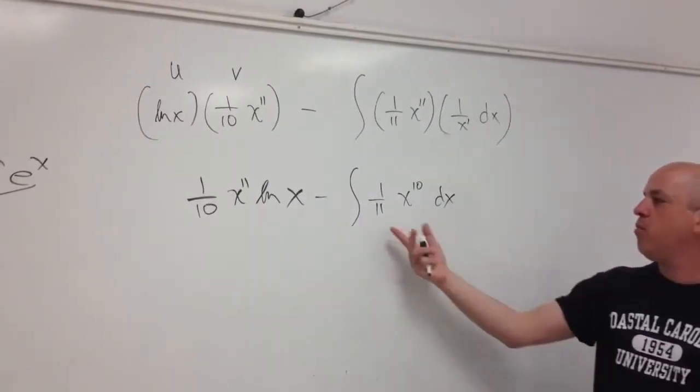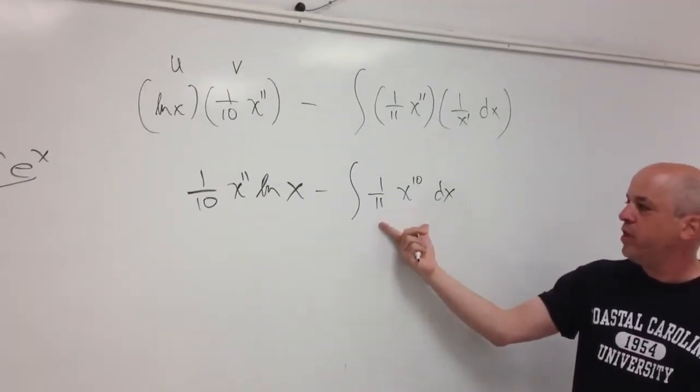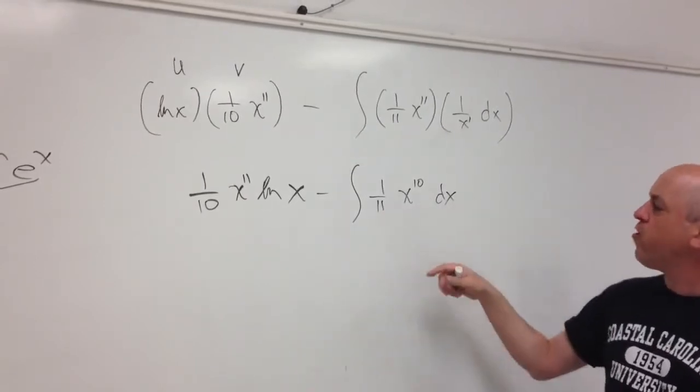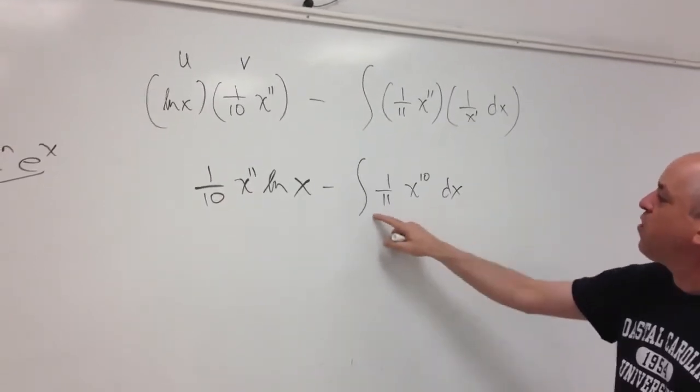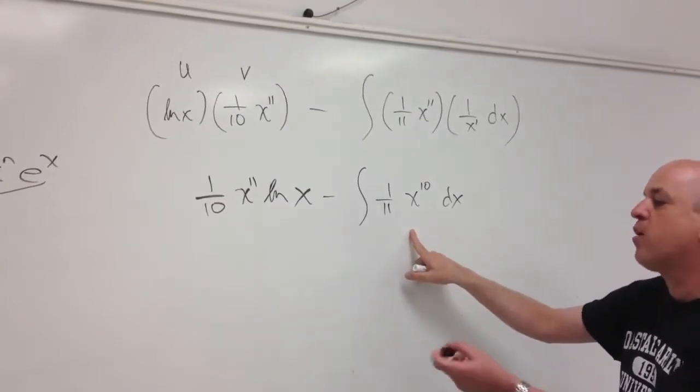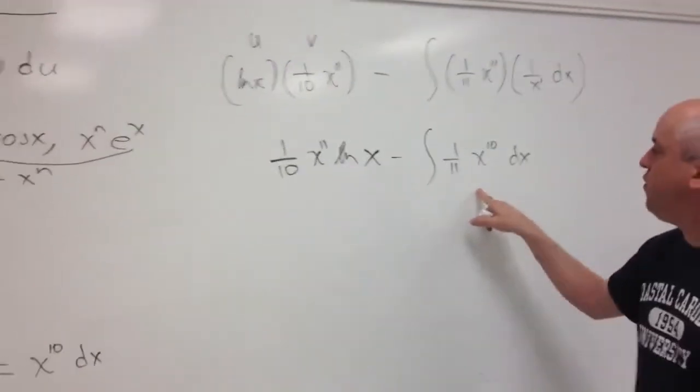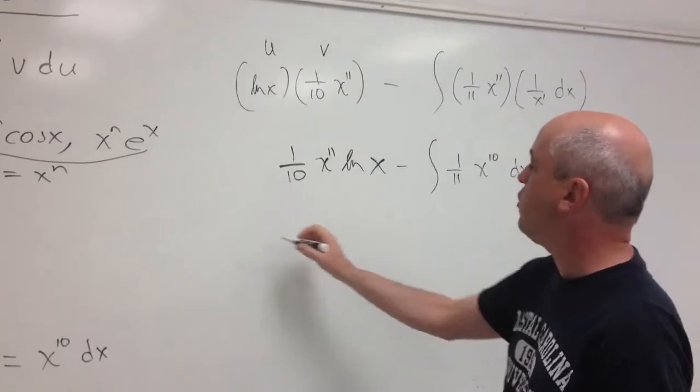Now we can finish off the problem by simply computing this antiderivative. Now anytime you're using integration by parts, if you run into something that you can't integrate at this stage, you need to go back and re-evaluate your choice of u and dv. But this one we know how to do, so we're in good shape.